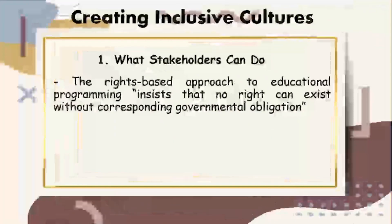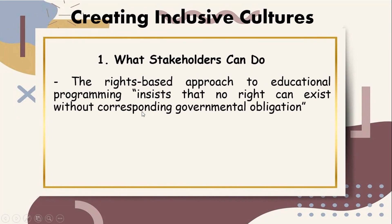The rights-based approach to educational programming insists that no right can exist without corresponding governmental obligation. Governments and communities are starting to understand how they are accountable to children with additional needs in fulfilling their right to education and providing access to quality education that is also safe, welcoming, and inclusive. Legally defining terms and formalizing a system for setting up inclusive schools ensures uniformity, universality, consistency of implementation, and eventual success of inclusion. The following are some steps stakeholders can take to create inclusive cultures.